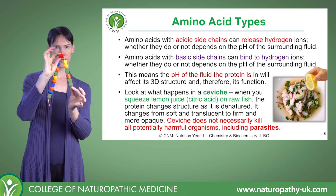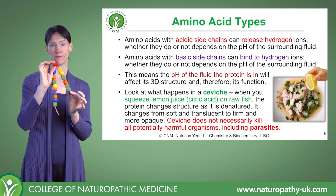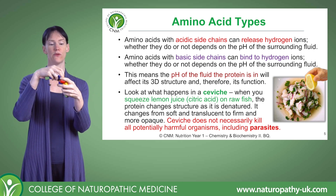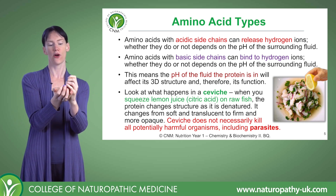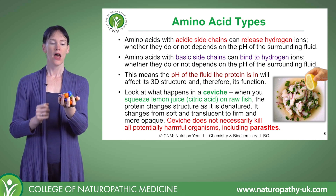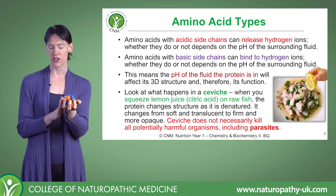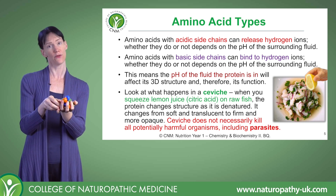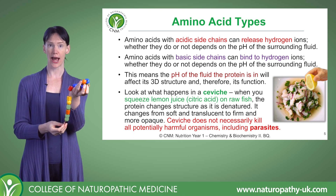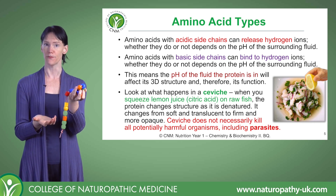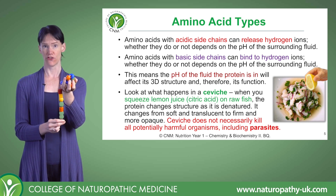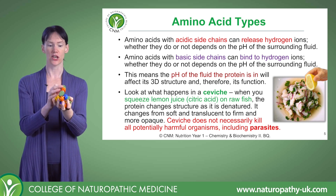If we imagine this red bead is an acidic side chain, at a certain pH that side chain wants to be hidden in the middle of the protein, so the protein folds into a configuration where it's hidden. If the pH changes and that red amino acid now wants to be on the outside, the protein chain will unravel to allow it to interact with the solution — the protein changes structure. That's called denaturation: the protein unfolding and unravelling.